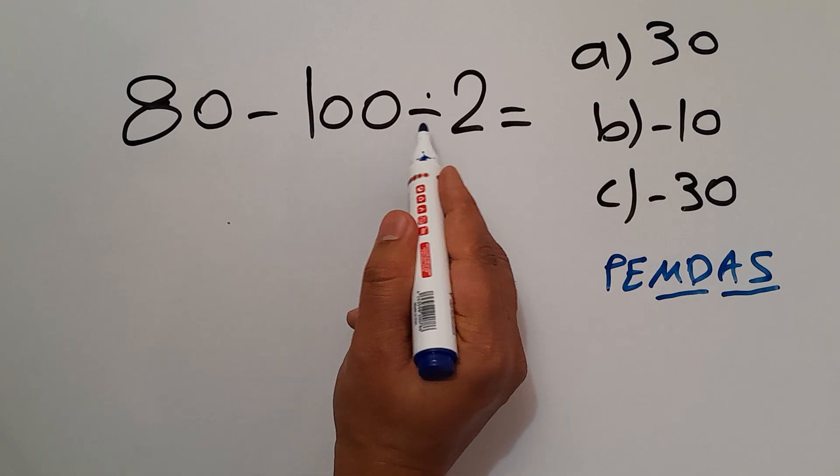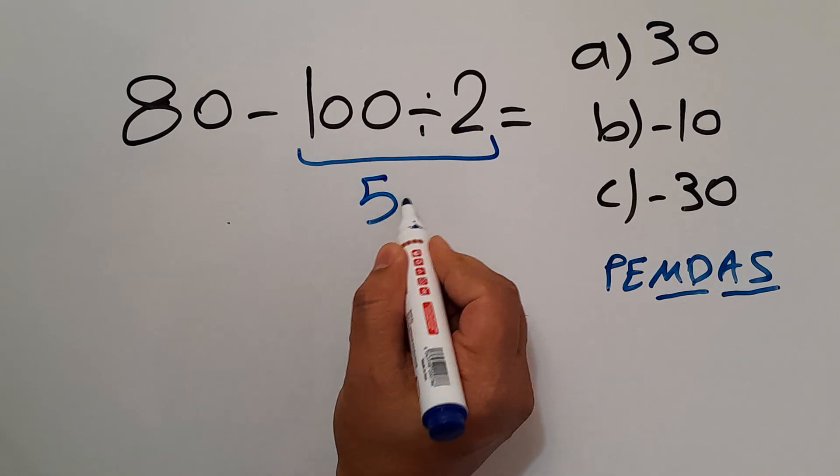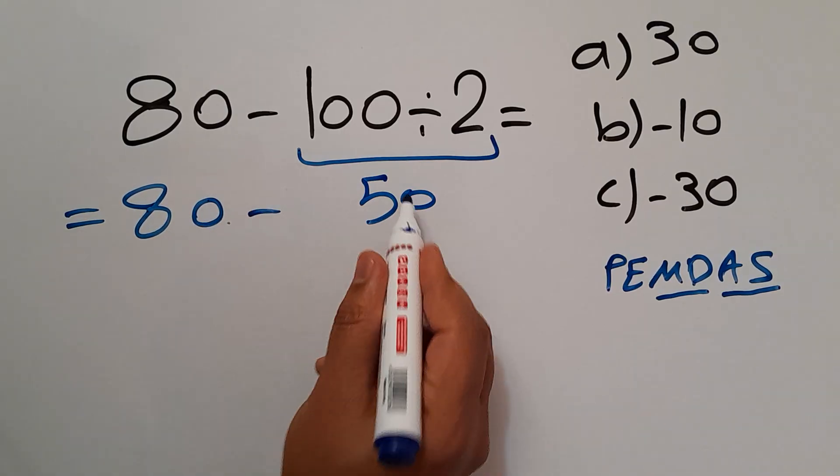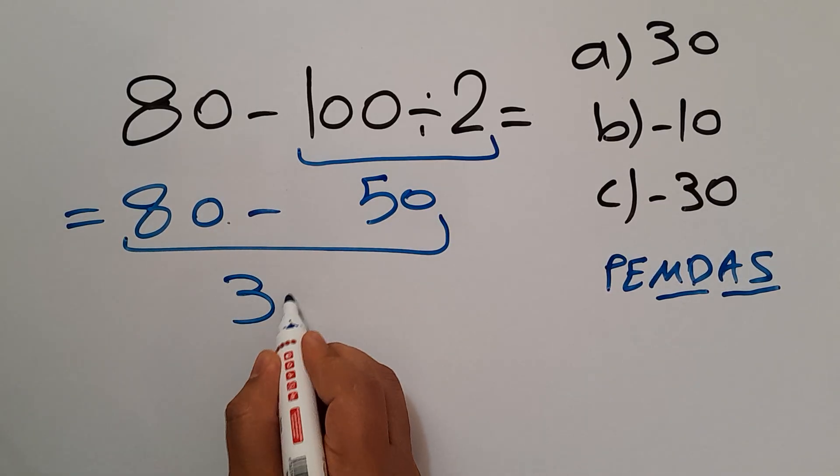So 100 divided by 2 gives us 50. So we have 80 minus 50, which equals 30.